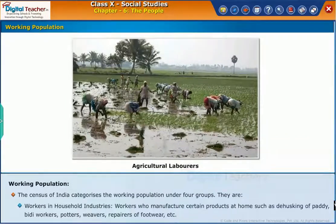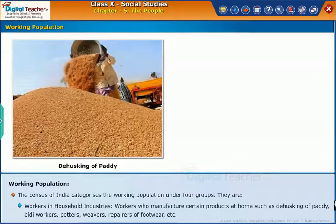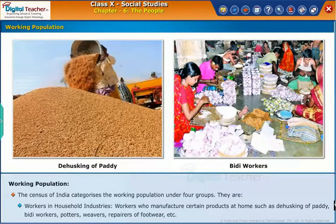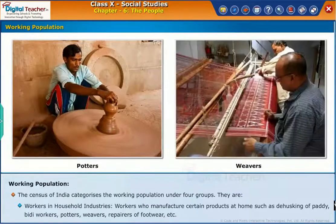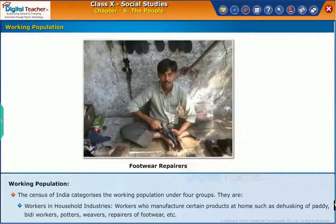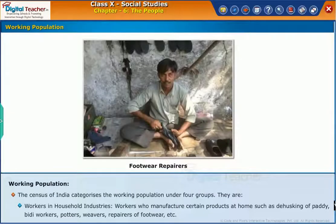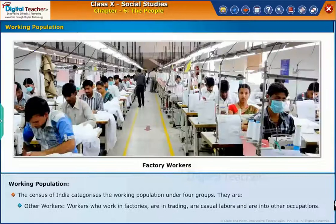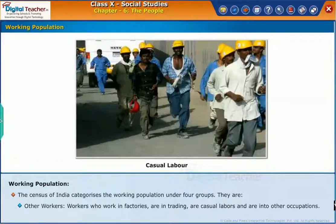Workers in household industries are workers who manufacture certain products at home, such as de-husking of paddy, bidi workers, potters, weavers, repairers of footwear, etc. Other workers are those who work in factories or in trading, are casual labor, and are into other occupations.